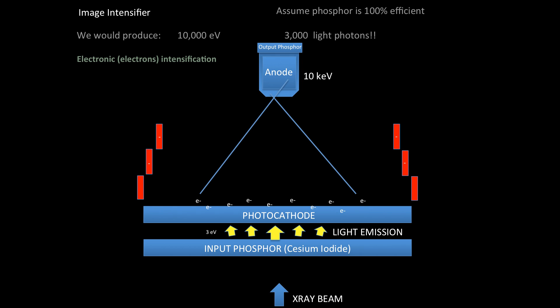Therefore, by this potential, assuming we have a phosphor that's 100% efficient, which is really not the case in reality but approximately, you would be producing 10,000 electron volts and yielding 3,000 light photons. So there's significant magnification going on here as a result of the potential that we generate through the acceleration of electrons towards the anode.